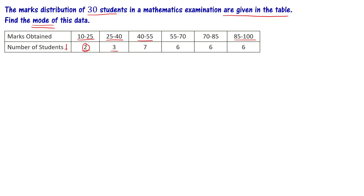The same principle applies here. A particular observation is the most frequent. You can see that the class 40 to 55 — this observation or score range occurs 7 times. Seven students have got a score within the range 40 to 55. This class has the highest frequency.